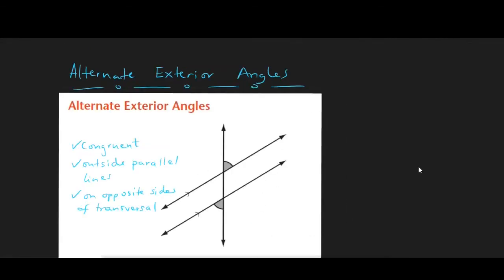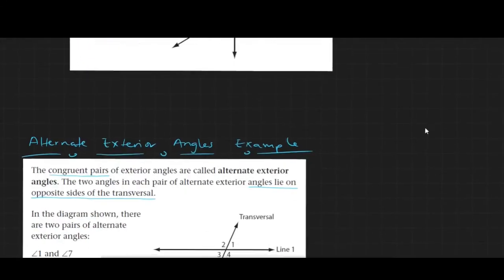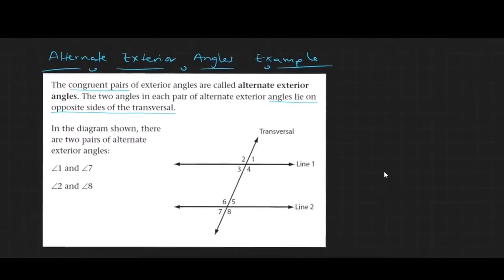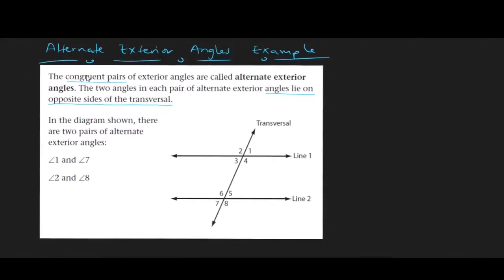With alternate exterior angles, they are also congruent but they lie on the outside of the two parallel lines. They are also on opposite sides of the transversal. Referring to our earlier diagram, they are congruent, lie on opposite sides of the transversal, and are outside the two parallel lines — so we have angles 1 and 7, and angles 2 and 8.